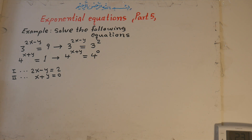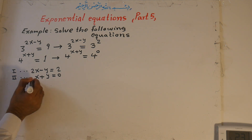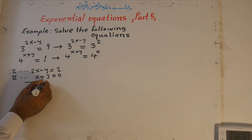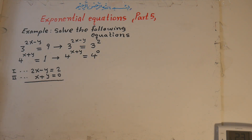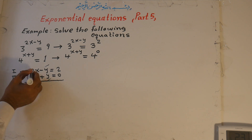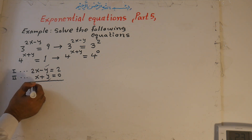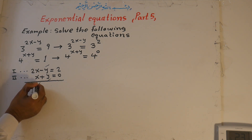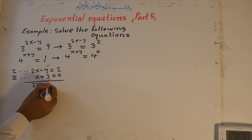Now we solve these two equations — we already know how from previous lessons. We solve them algebraically: the negative y cancels with the positive y, giving two x plus x equals three x, which equals two plus zero, so three x equals two.